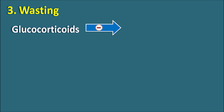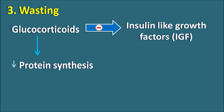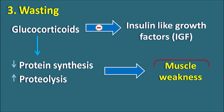The third side effect is wasting. Glucocorticoids can inhibit insulin-like growth factor (IGF), which is required for protein synthesis. When this factor is inhibited, it may result in retardation of growth. These drugs can reduce protein synthesis and also increase proteolysis. Because of this, they produce muscle atrophy, resulting in muscle weakness. So muscle wasting is another important side effect of glucocorticoids. HOW thus indicates hyperglycemia, osteoporosis, and wasting.